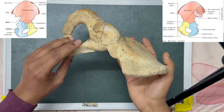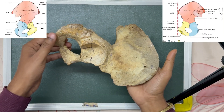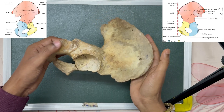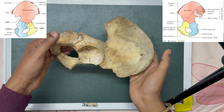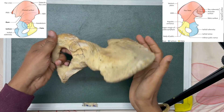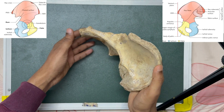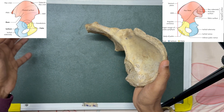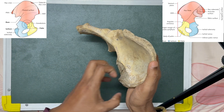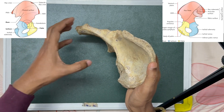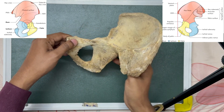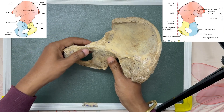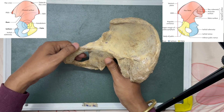Today's topic is the hip bone, which is a large flat irregular bone consisting of three parts. The right and left hip bones come together along with the sacrum bone on the back side to form the pelvis. The hip bone consists of three parts: ilium, ischium, and pubis.